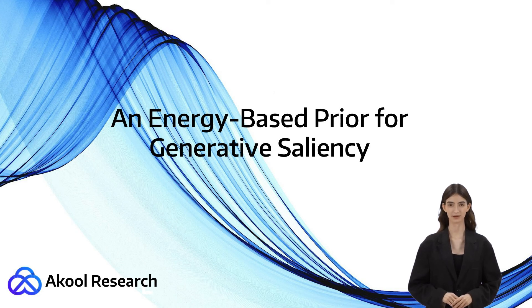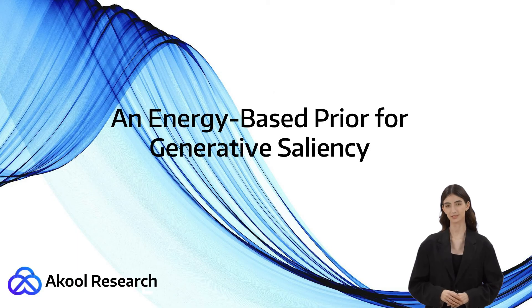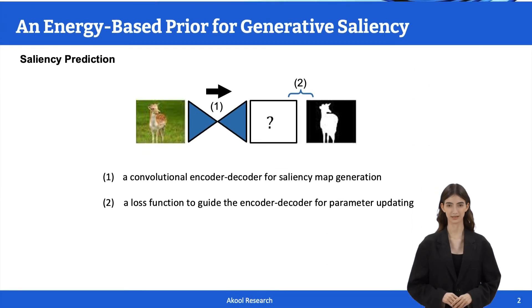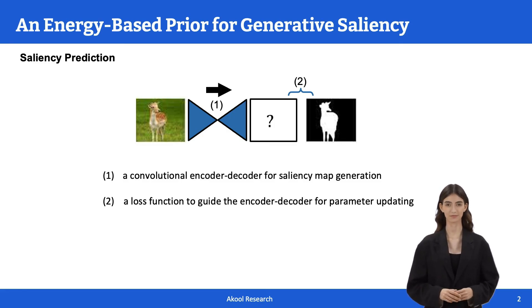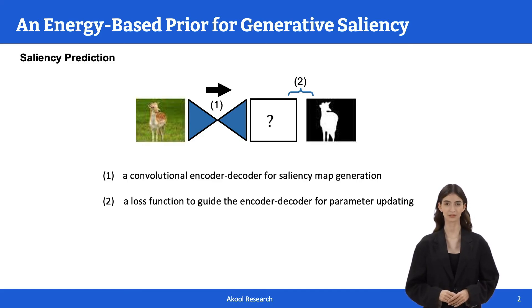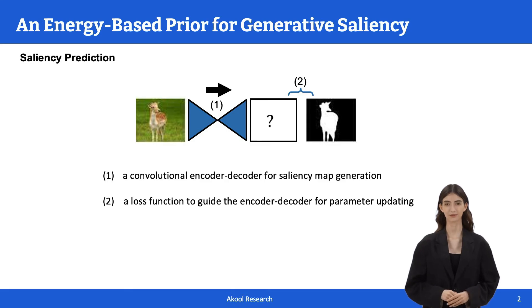Today, I am going to present a paper which is about generative salient object detection using a latent space energy-based model. Salient object detection aims at highlighting salient object regions in images, which is binary image segmentation. For example, given an RGB or RGBD image, the salient object detection algorithm outputs a binary saliency map to indicate the salient object.